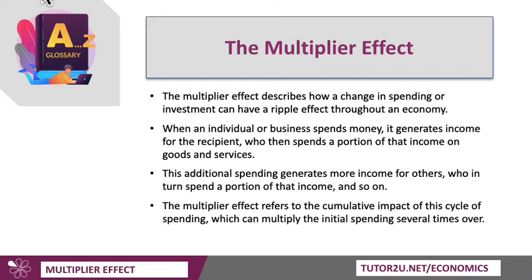When somebody or a business spends extra money, that generates income for the recipient. One person's spending is somebody else's income, and they then spend a portion of that income on other goods and services. This additional extra spending generates more income for others, who in turn spend a proportion of that income, and so on and so forth. In other words, a small change in demand can have a bigger final effect on aggregate demand and GDP — that's called the multiplier effect. It describes the cumulative impact of this cycle of spending, which can multiply the initial spending several times over.